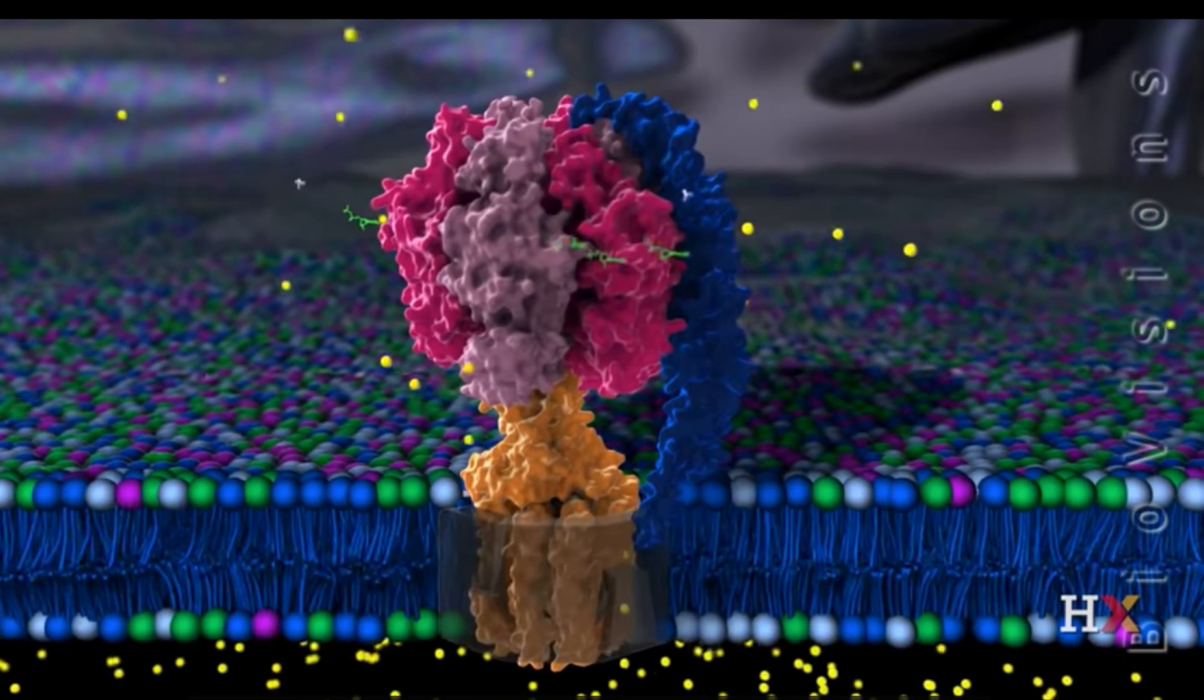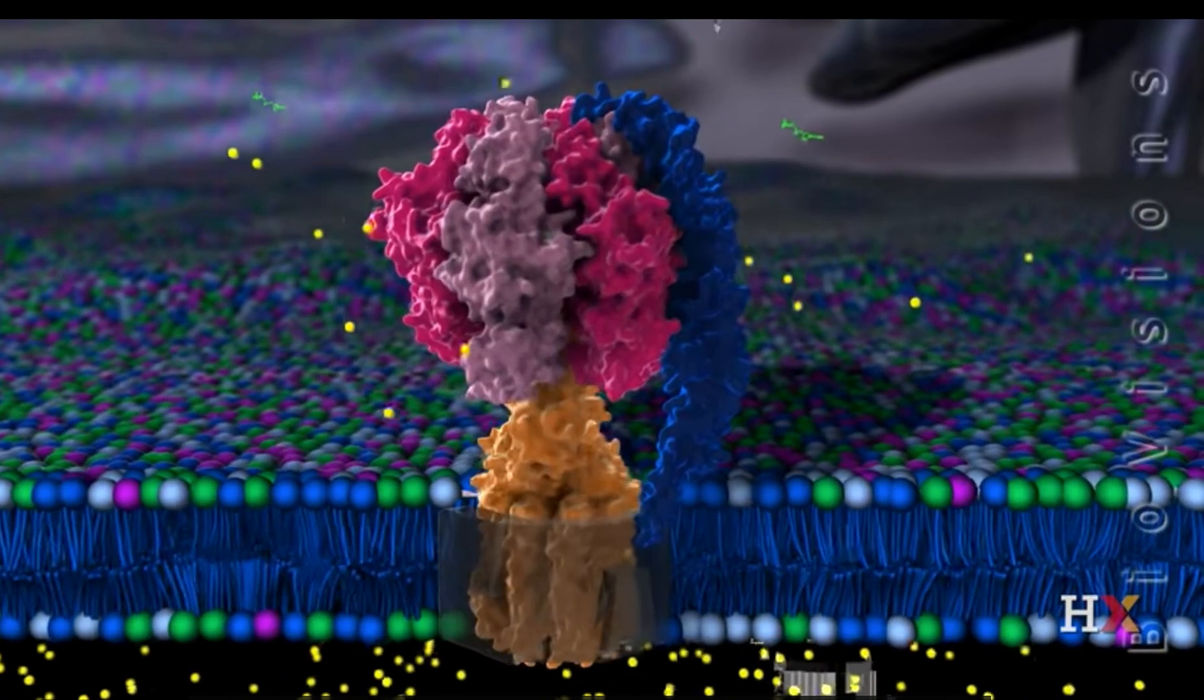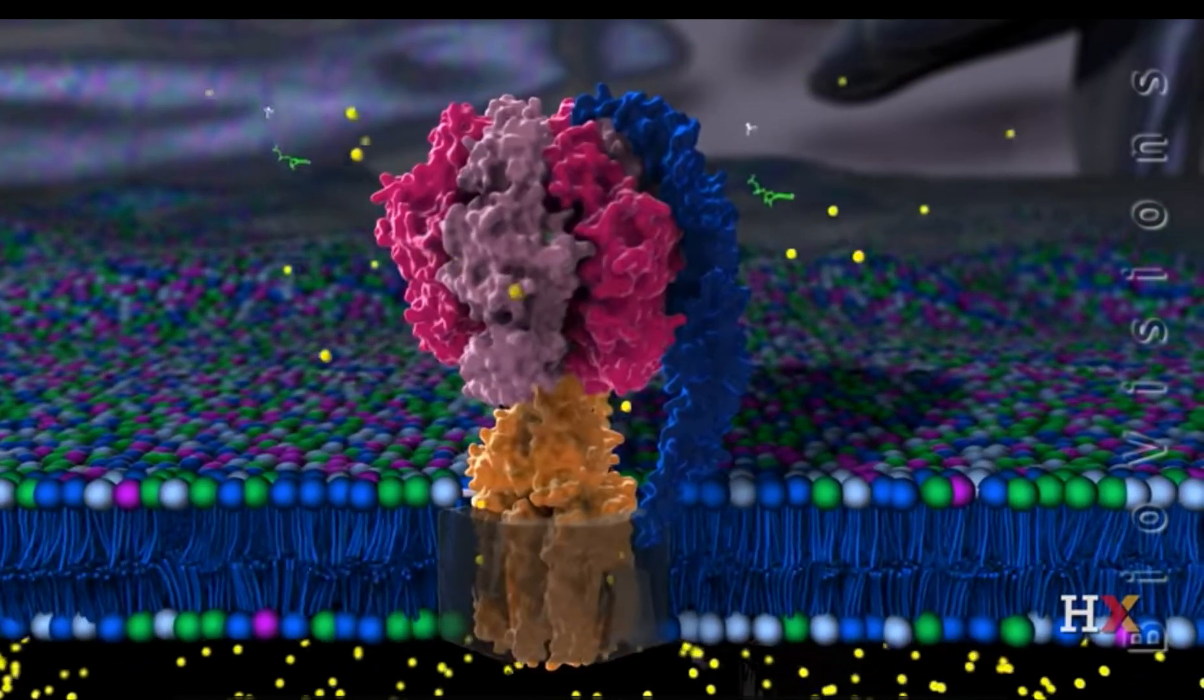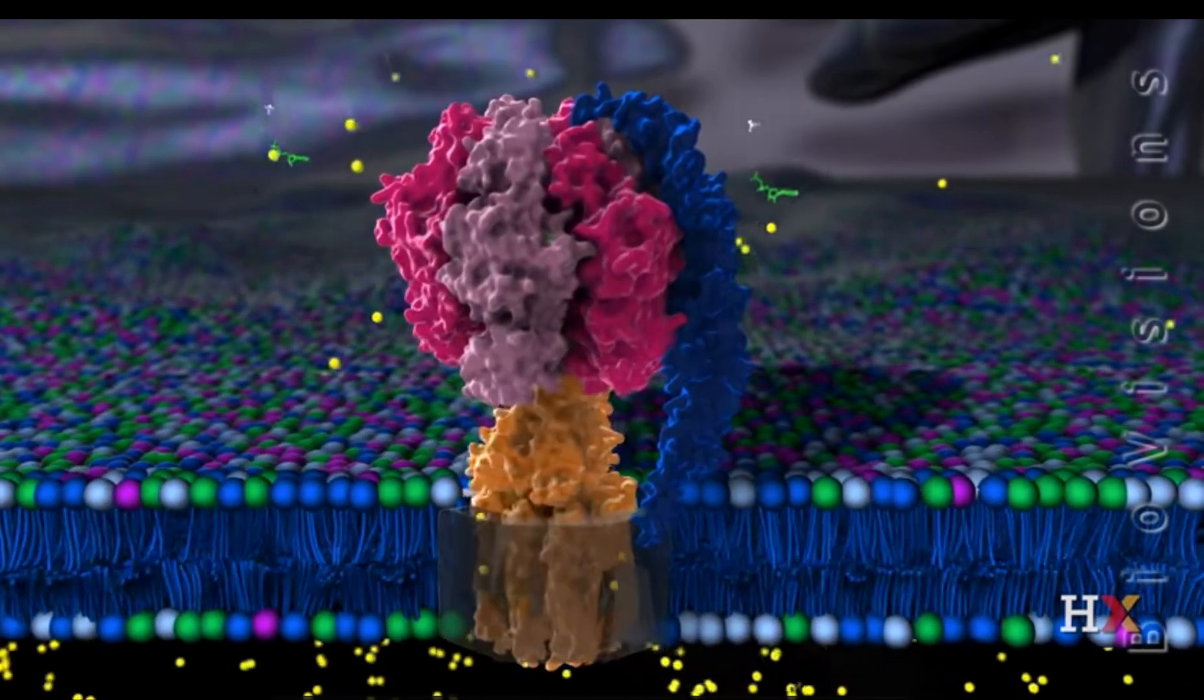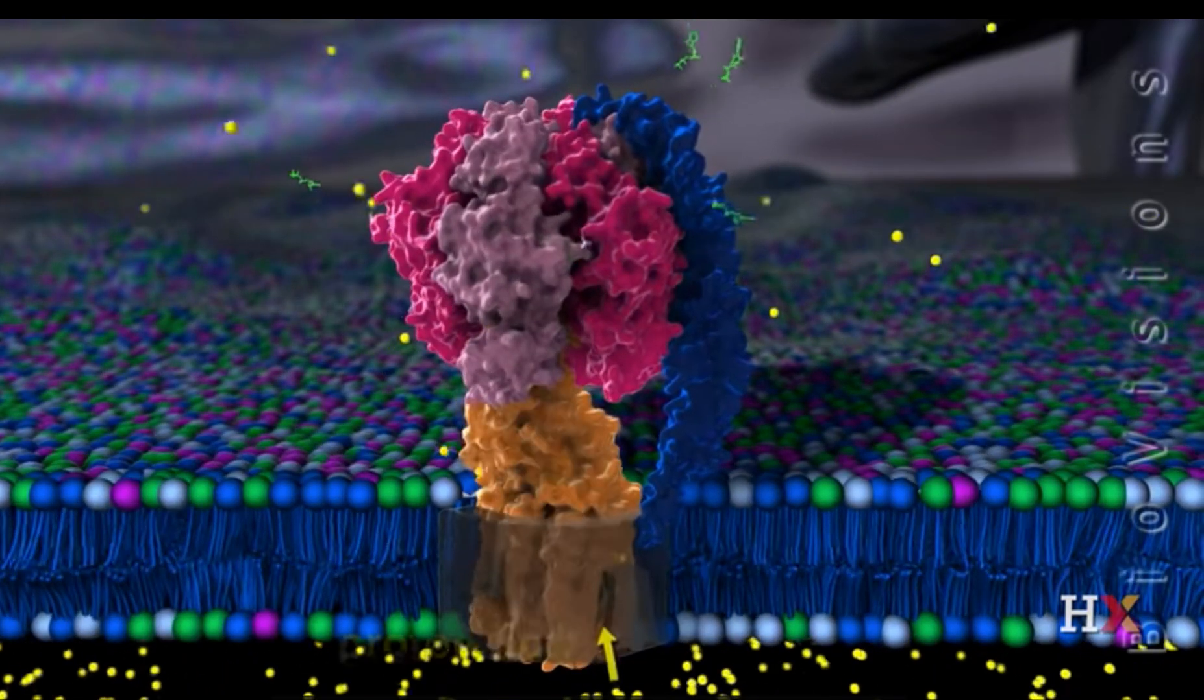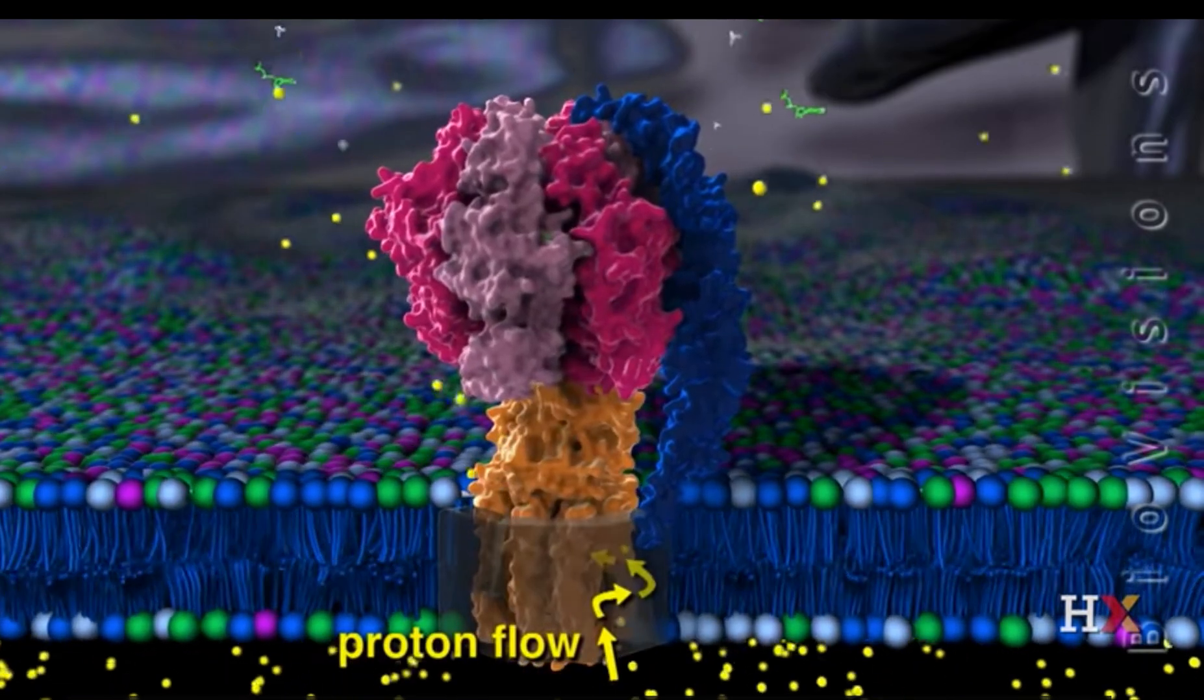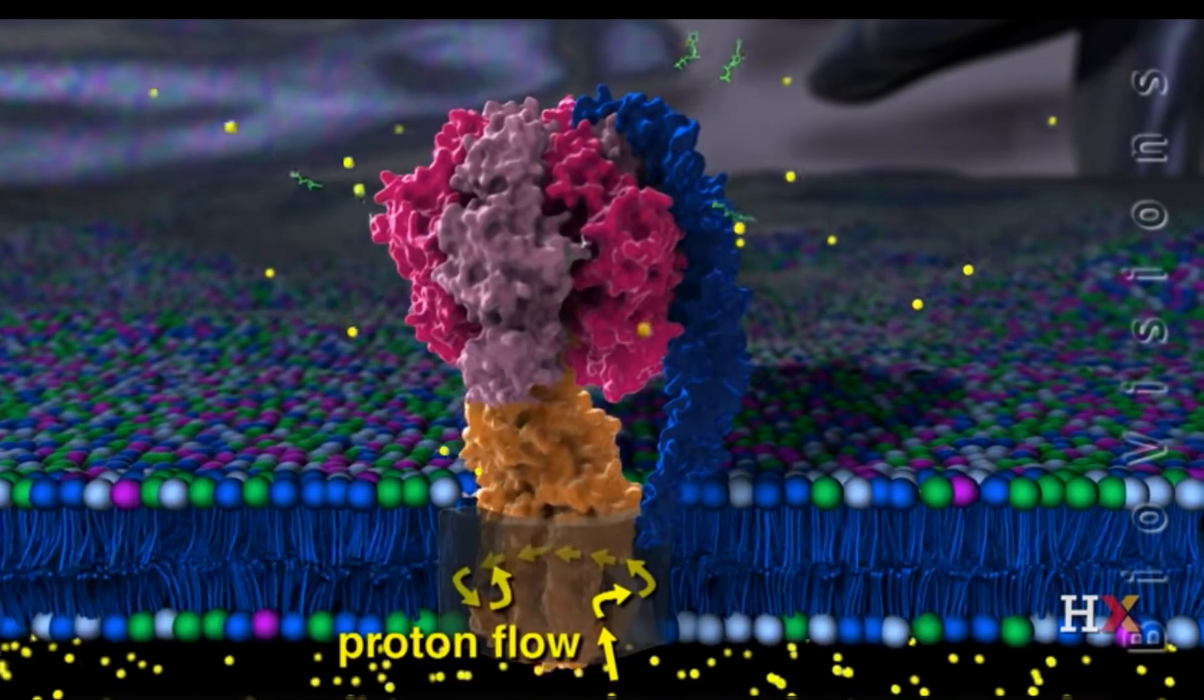Just as man-made power plants produce electrical energy by using the flow of wind, water or steam to rotate a turbine, the synthase makes ATP by using proton flow from one side of the inner membrane to the other to rotate protein subunits.